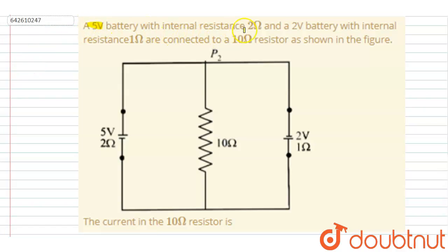When a 5-volt battery with internal resistance 2Ω and a 2-volt battery with internal resistance 1Ω are connected to a 10Ω resistor as shown in the figure, you have to calculate the current through the 10Ω resistor.